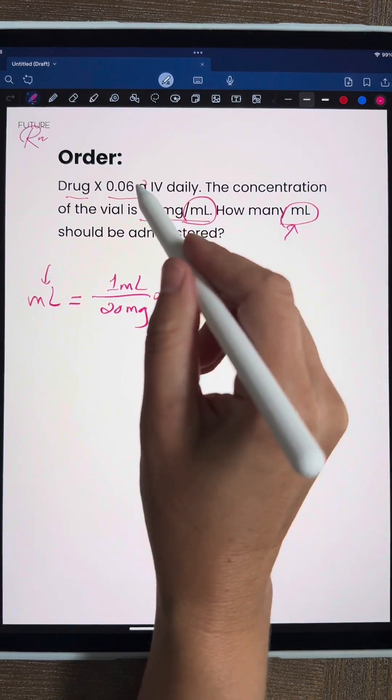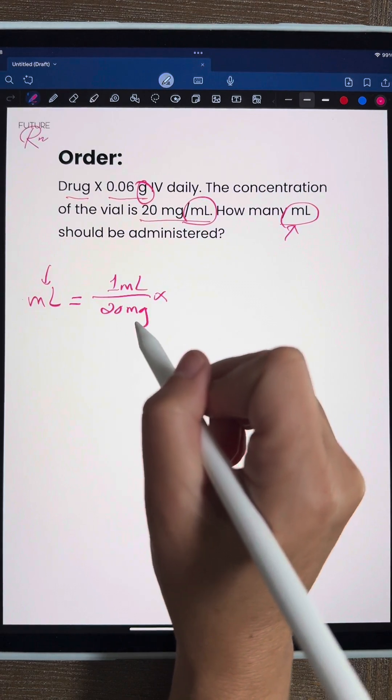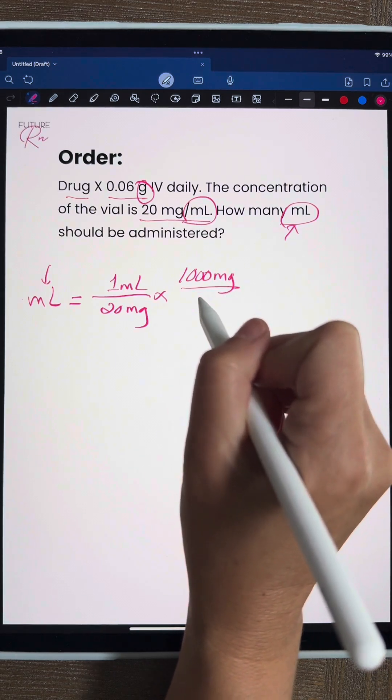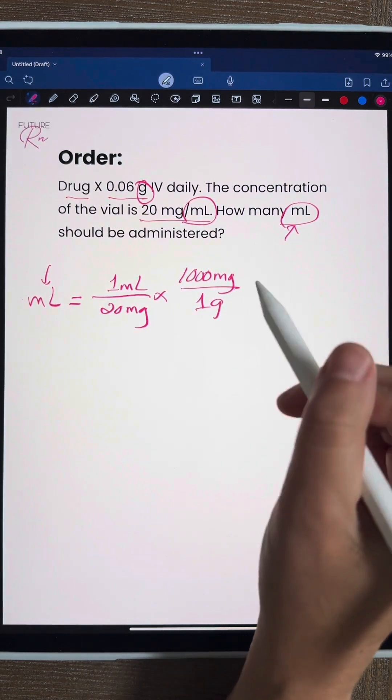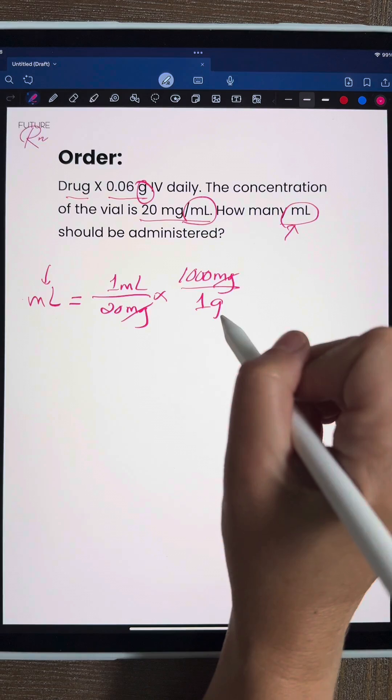So looking back up here we know we want to get to grams because that's how we're going to get this medication. We need to get rid of our milligrams. So this is where we want to have our conversion. A thousand milligrams equals 1 gram. That allows us to cross out our milligrams and now we have milliliters and grams.